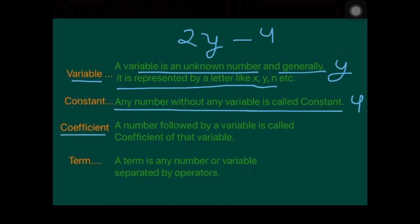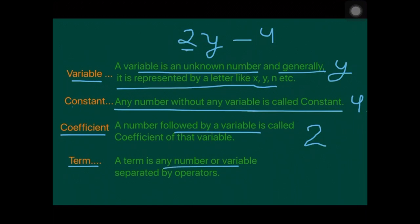The coefficient is the number followed by a variable — the number which is multiplied by the variable. So in 2y minus 4, the coefficient is 2. A term is any number or variable separated by an operator. In 2y minus 4, we have two terms: the first is 2y and the next is 4.